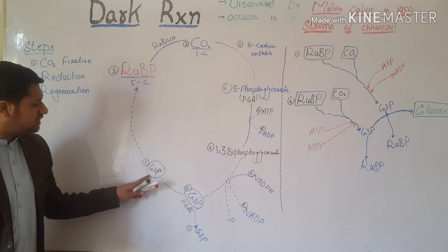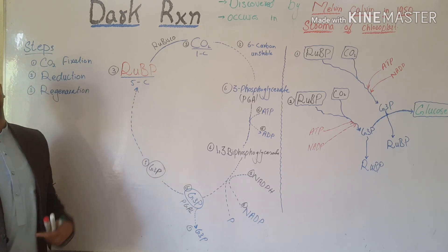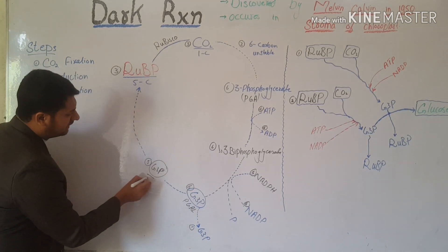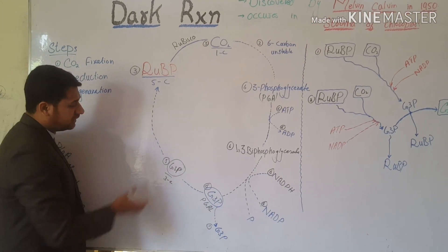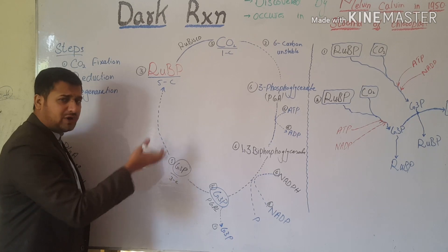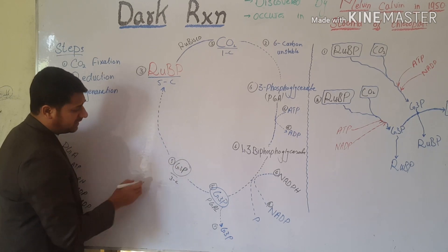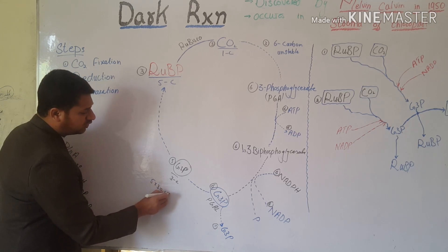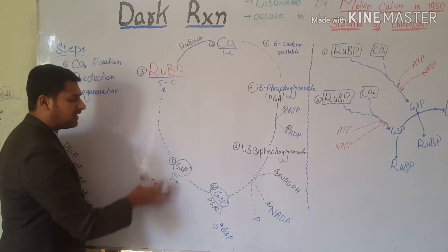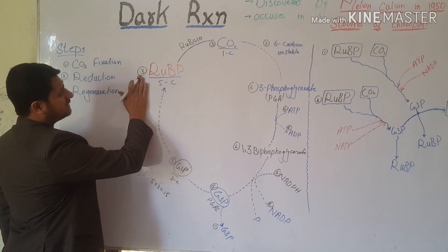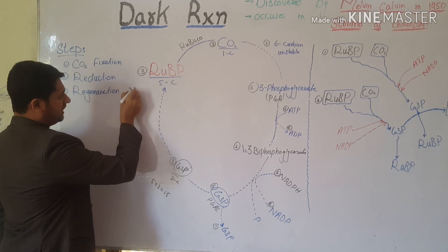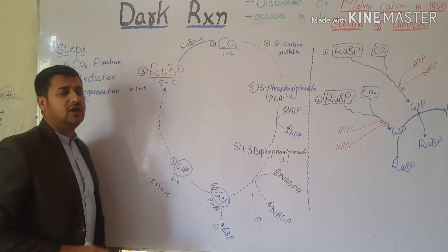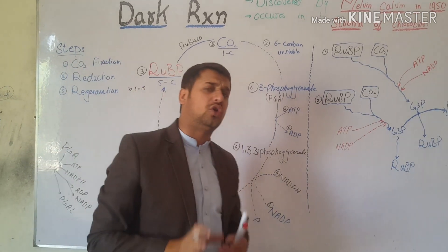These 5 G3P molecules will be regenerated into ribulose bisphosphate. G3P contains 3 carbons, so 5 molecules of G3P have 5 × 3 = 15 carbons total. The regenerated ribulose bisphosphate molecules each contain 5 carbons, so 3 molecules of RuBP also have 3 × 5 = 15 carbons. The carbon count is balanced.